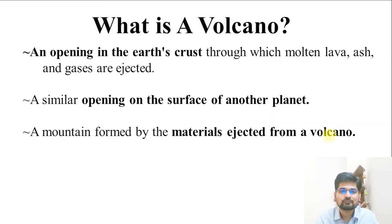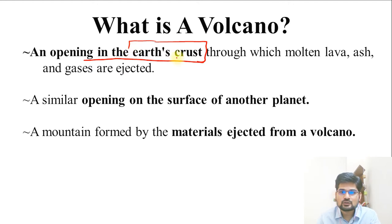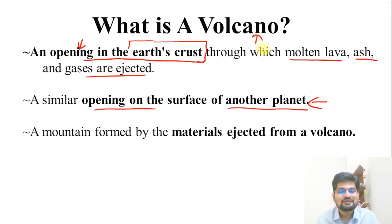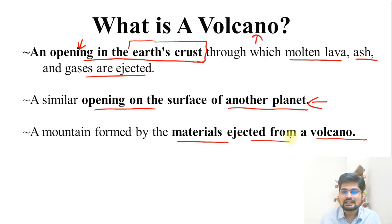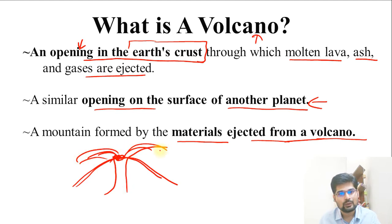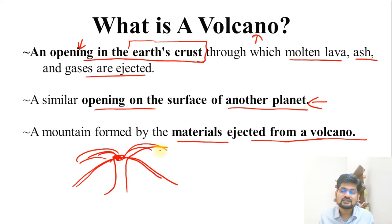A volcano is an opening in the Earth's crust — the uppermost layer — through which molten lava, ash, and gases are ejected. A similar opening on another planet can also be called a volcano. The mountain formed by materials ejected from a volcano is a volcanic mountain. It is basically a weak zone leading to the outflow of magma from within the Earth.